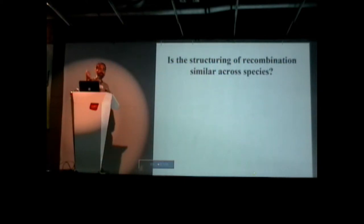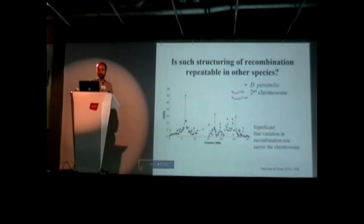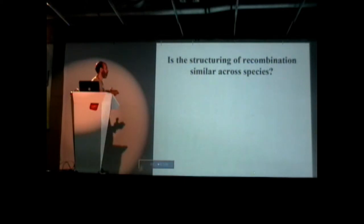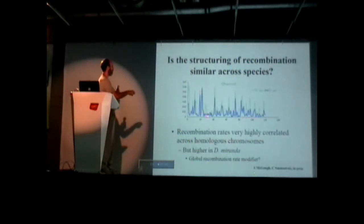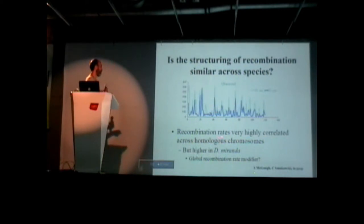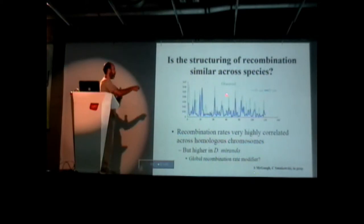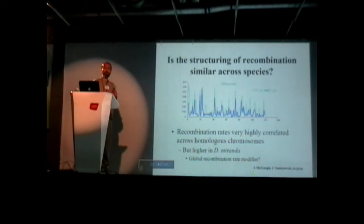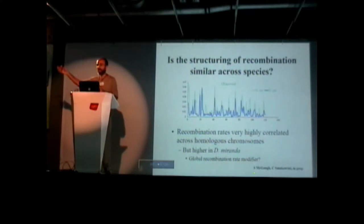Another question that came up: how similar are the two species in their recombination rate? In fact, they're actually very similar — look at the matching patterns. The blue is D. pseudoobscura and the light green is D. miranda, and they line up very well. Recombination is highly correlated across all these chromosomes. But interestingly, we do see that recombination rate is higher in D. miranda than in D. pseudoobscura. This suggests there may be a global recombination rate modifier — something that makes all recombination higher in D. miranda, even in the same regions.